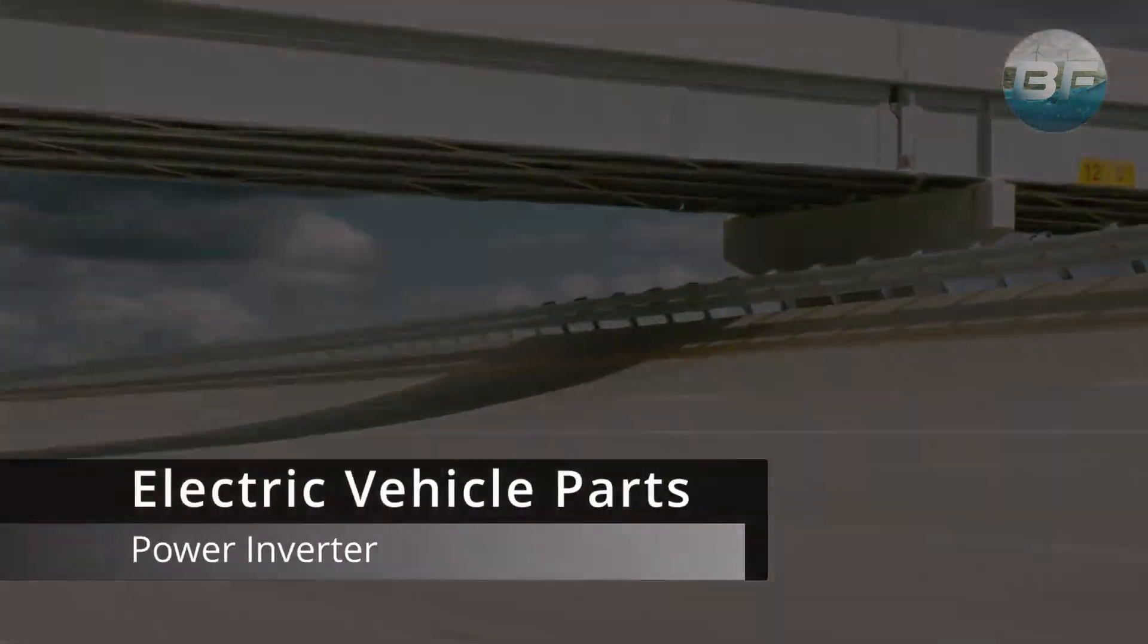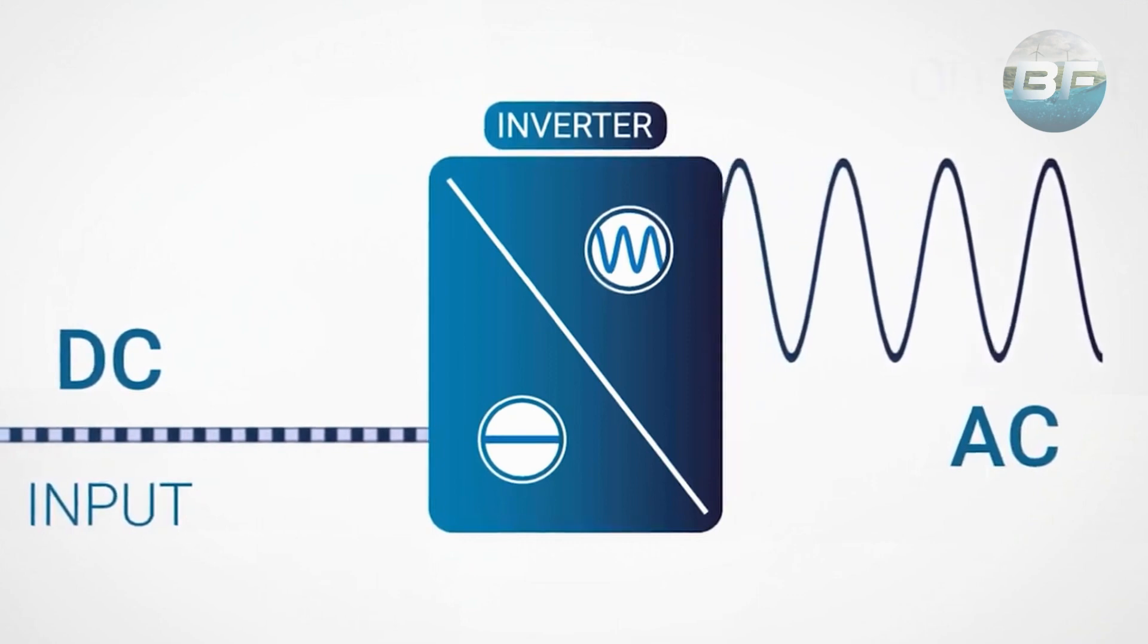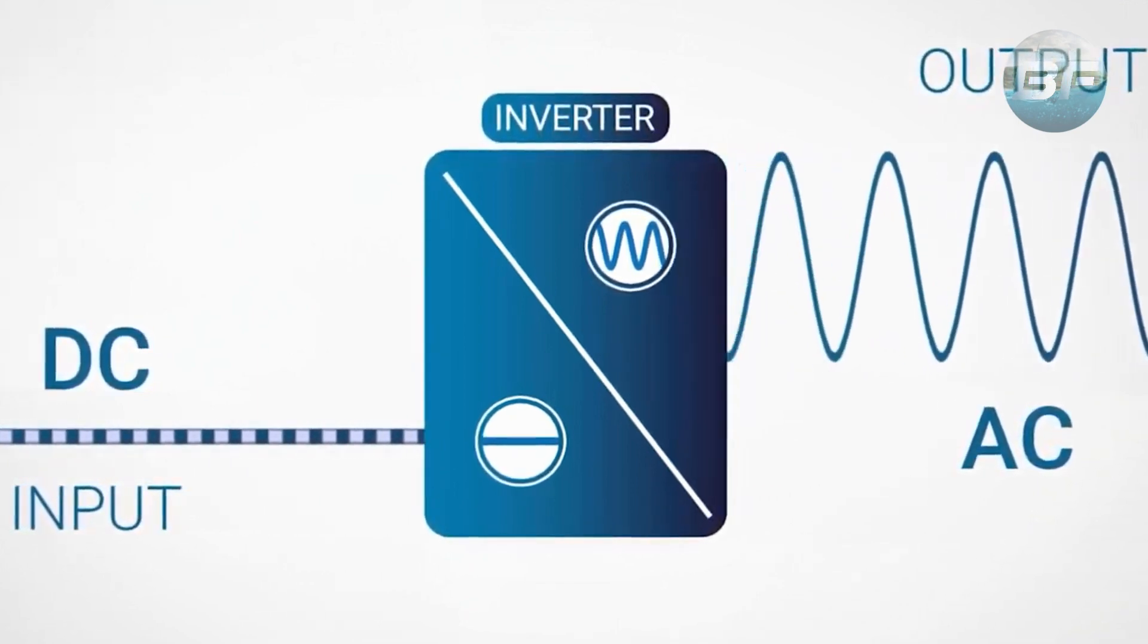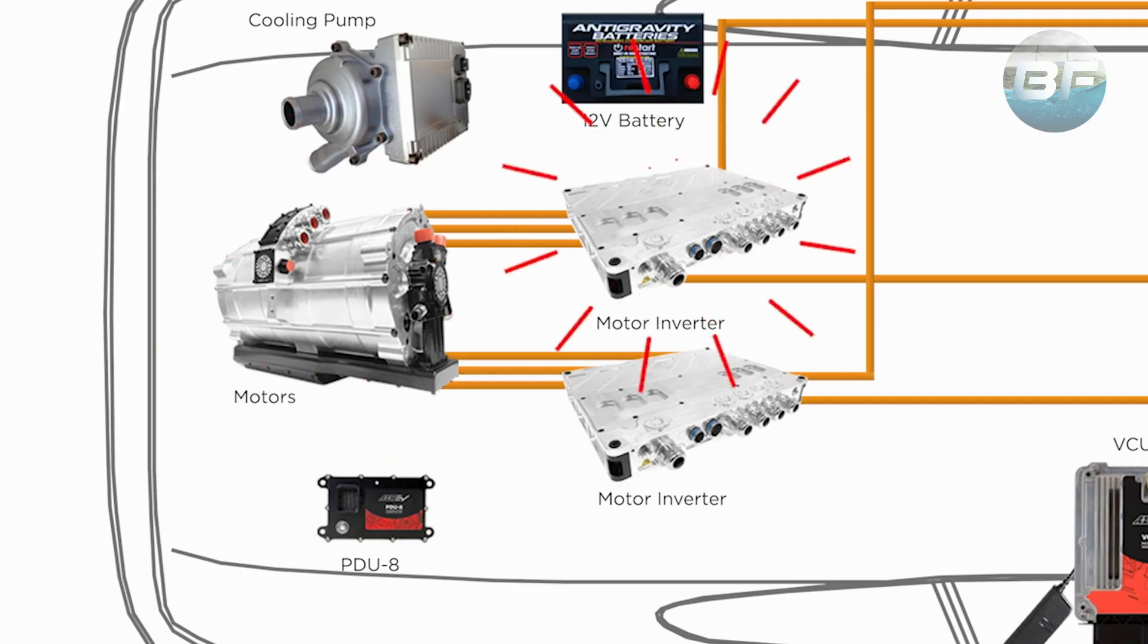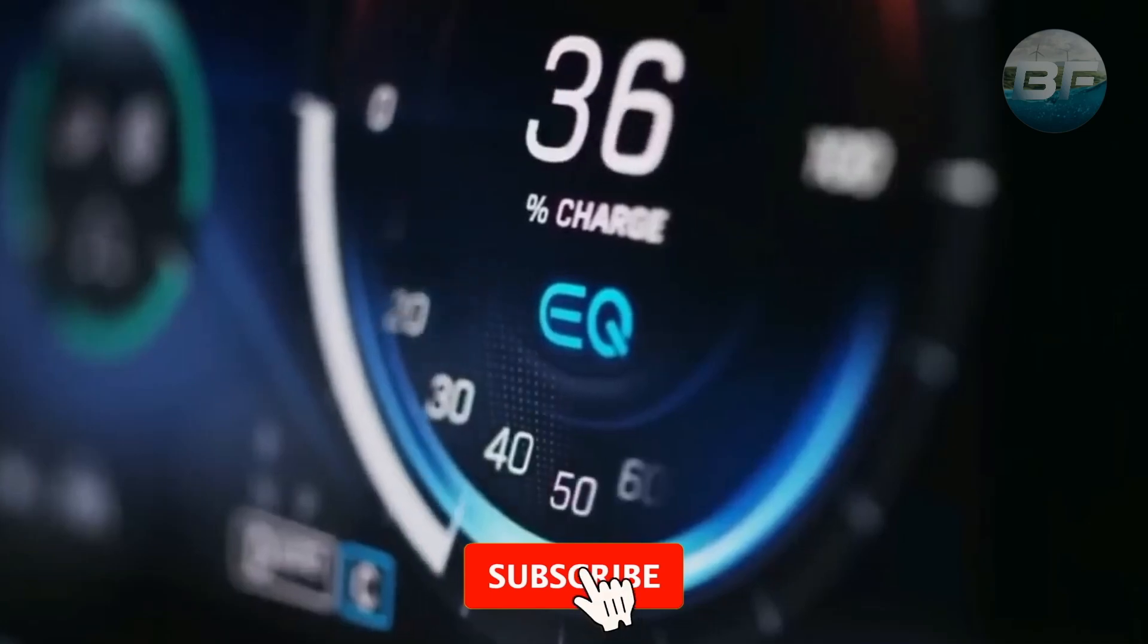In addition to converting DC power from the battery into AC power for the electric motor, the inverter also plays a critical role in regulating the flow of power between the battery and the motor. It monitors the voltage and current levels of both the battery and the motor, ensuring that they are operating within safe and optimal ranges.